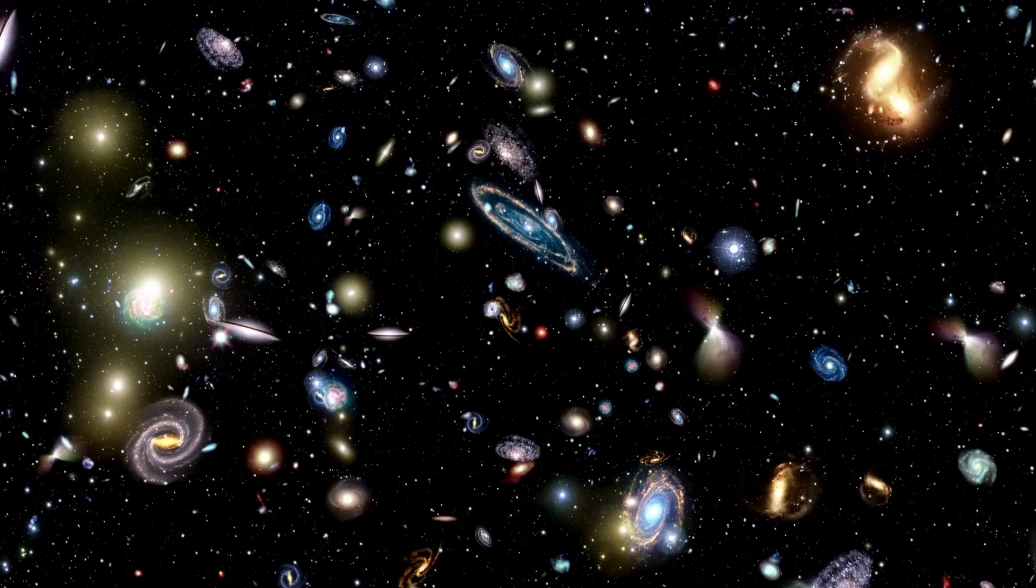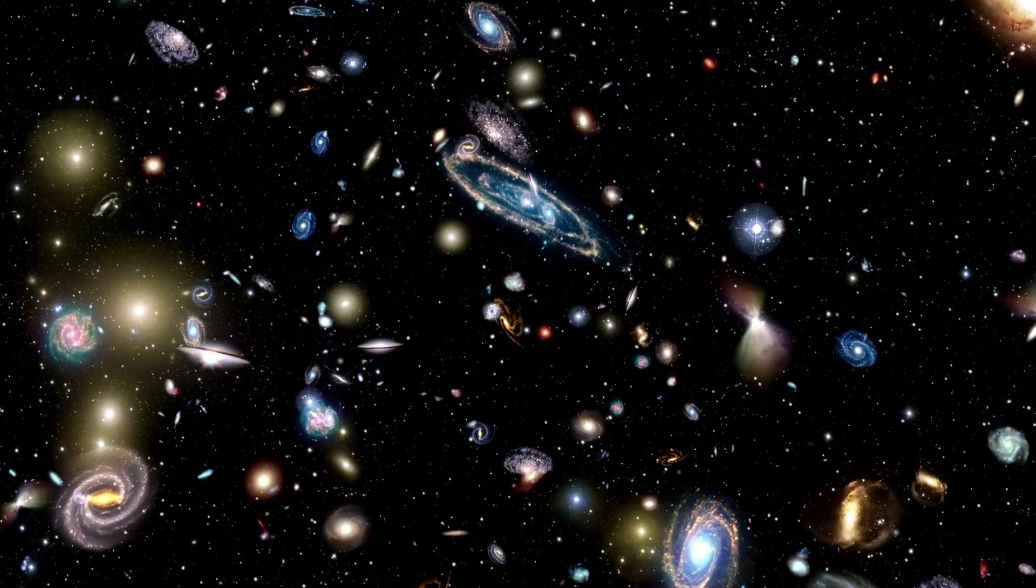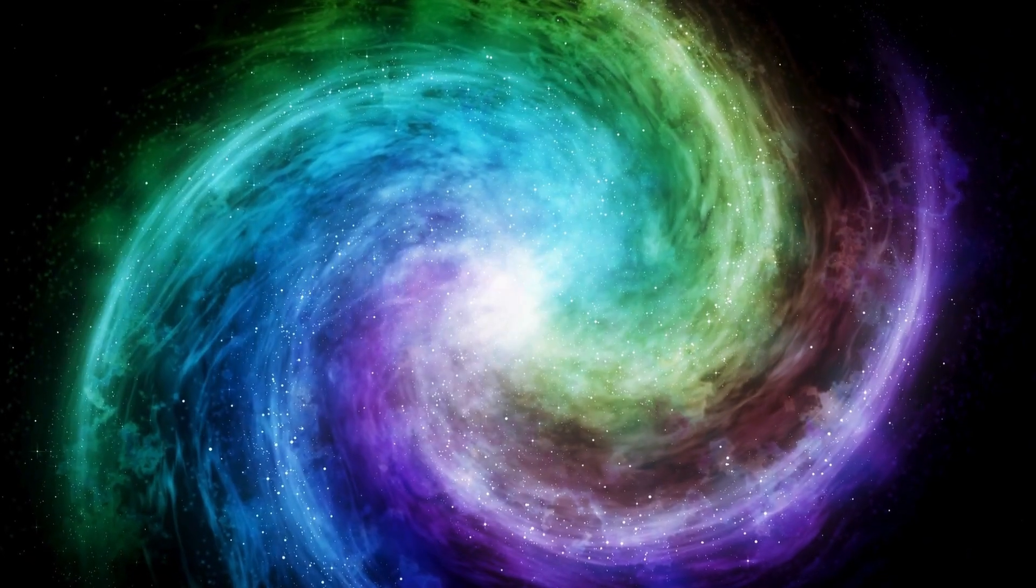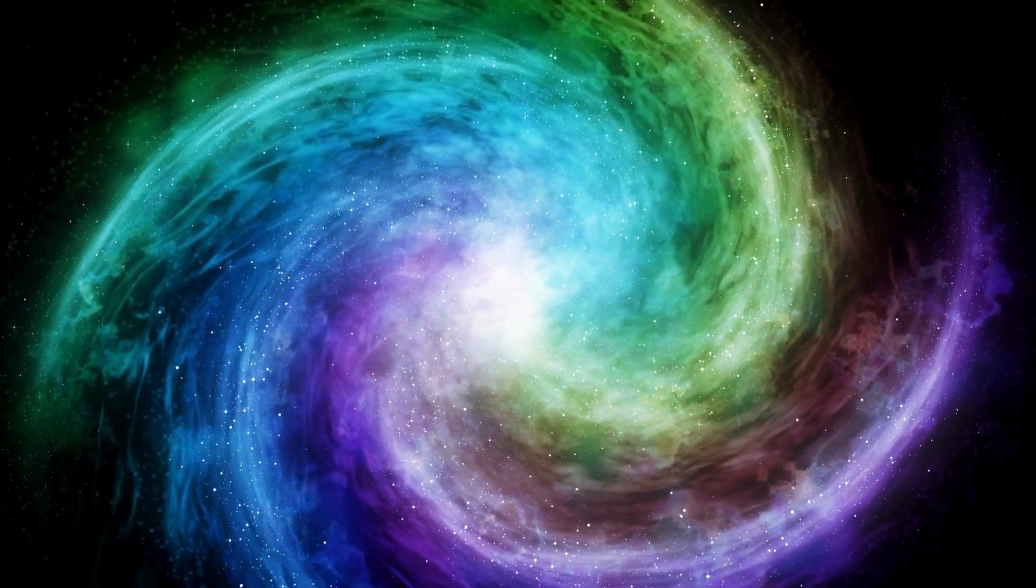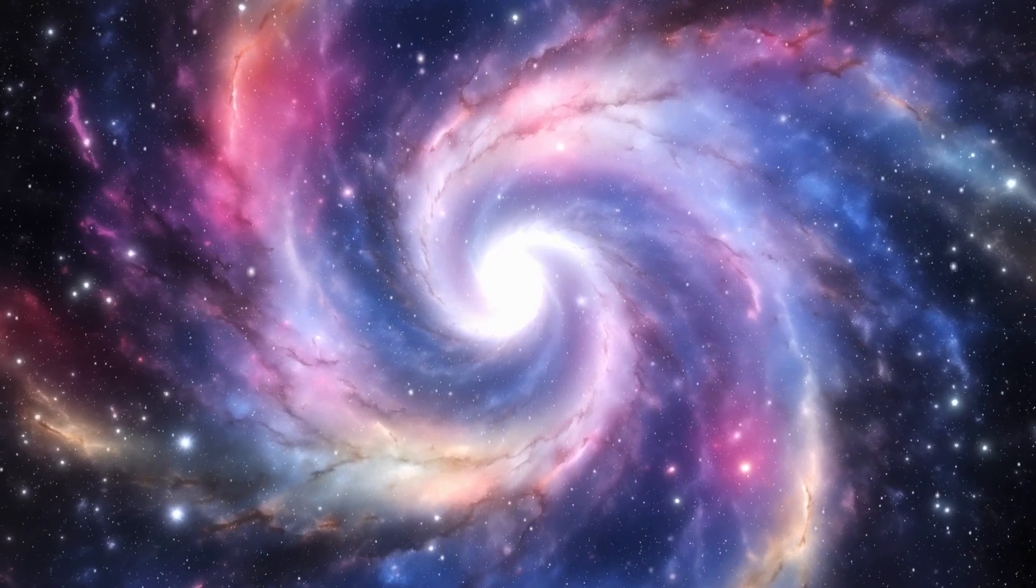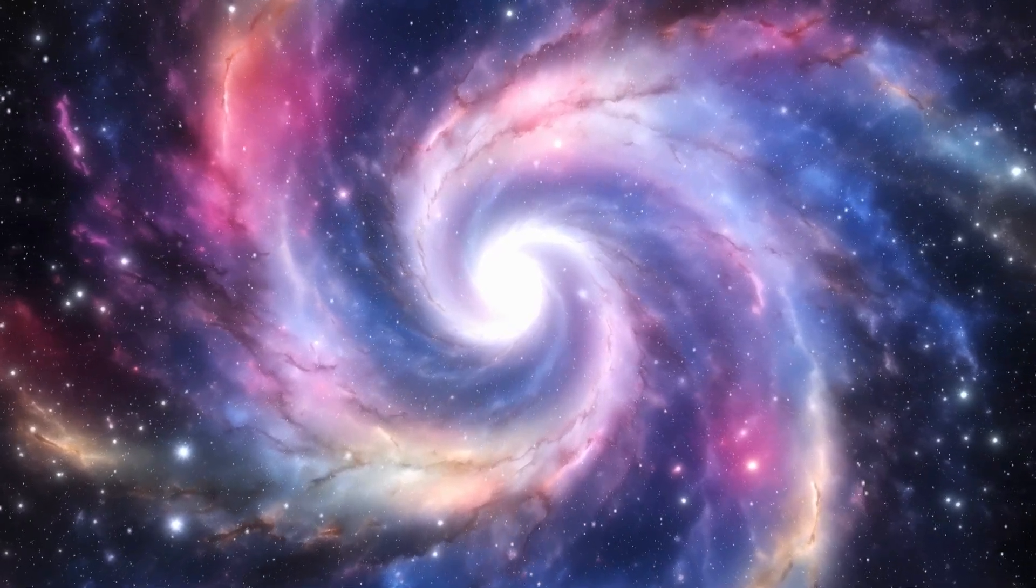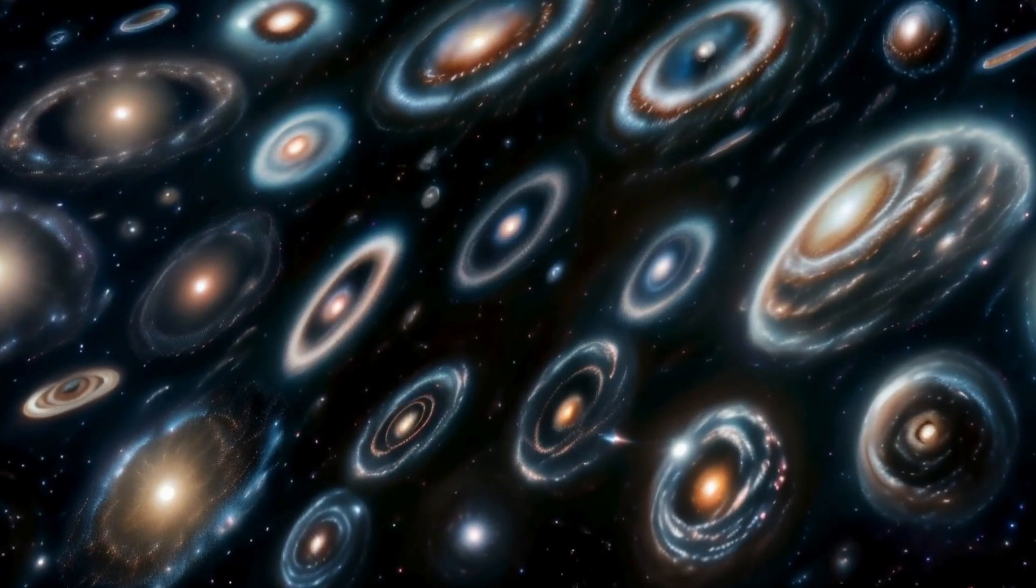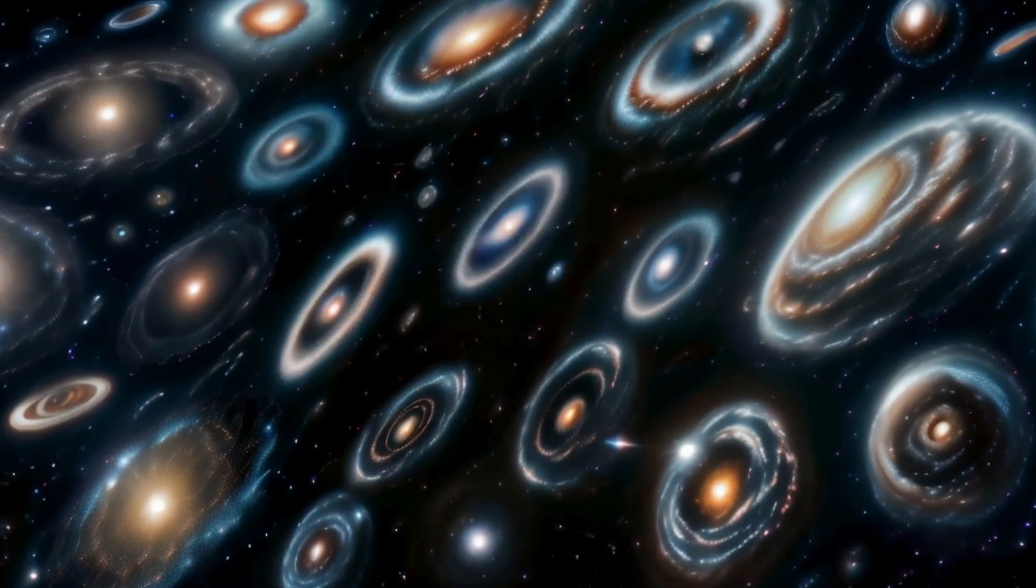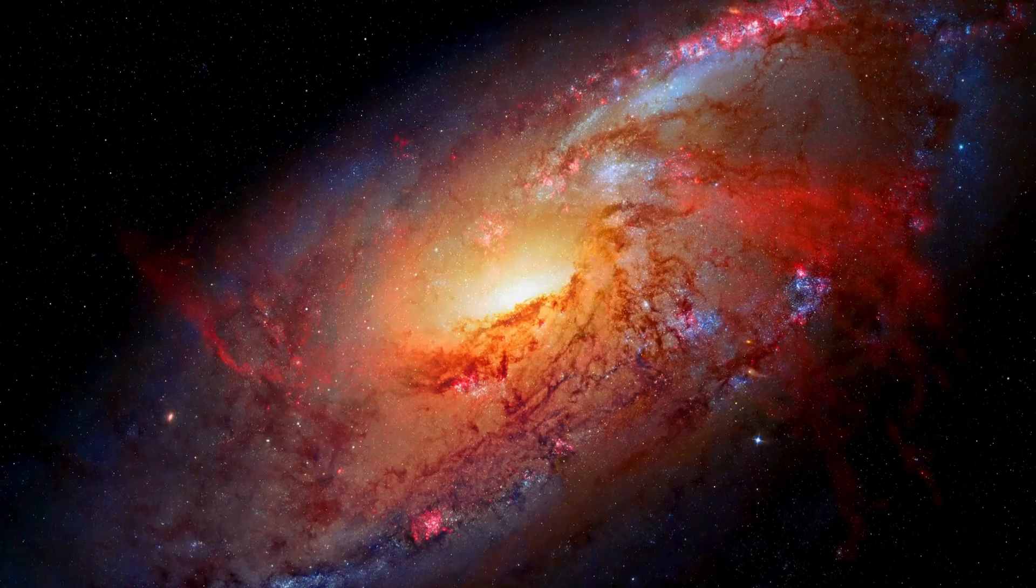Astronomers, being the space sleuths they are, use advanced techniques like astro-seismology. It's like eavesdropping on a star's inner conversations, listening to vibrations caused by waves traveling through its insides. These vibrations spill the beans on the star's age. For instance, applying this cosmic eavesdropping, astronomers roughly clocked the sun at about 4.58 billion years.